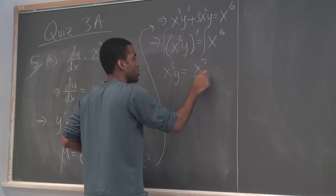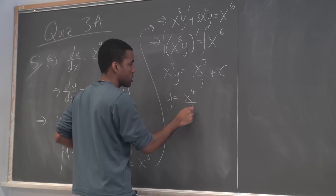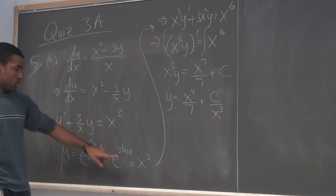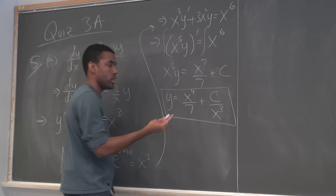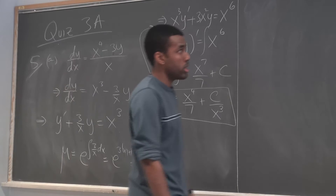Dividing both sides by x^3 gives you the solution. Since I didn't give an initial condition, we don't need to find C — that's the general solution.